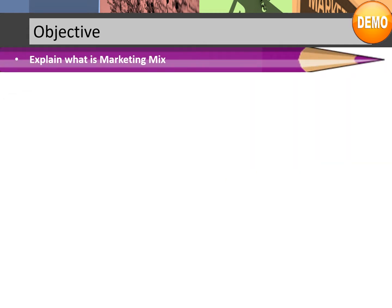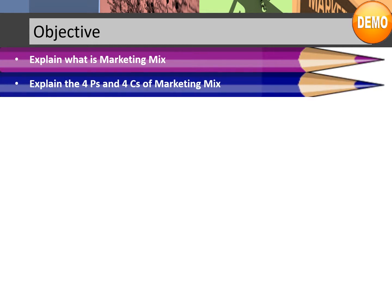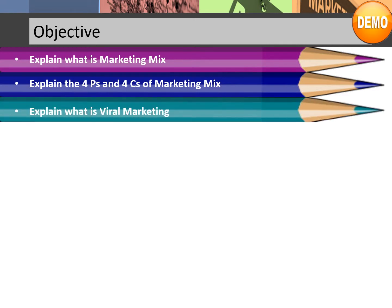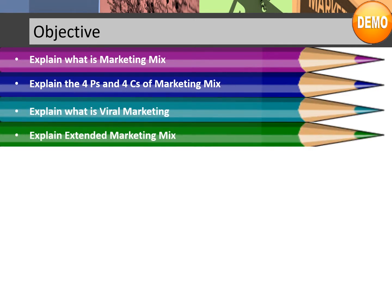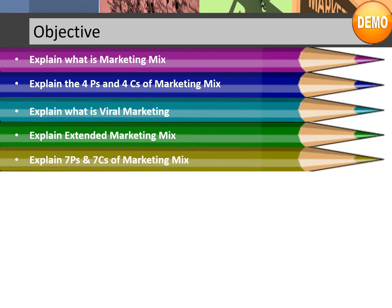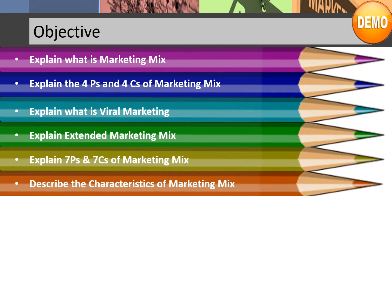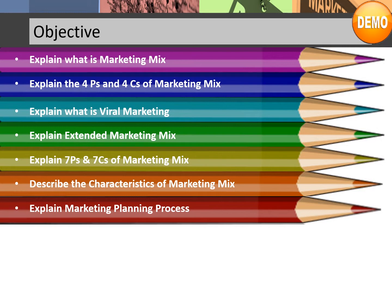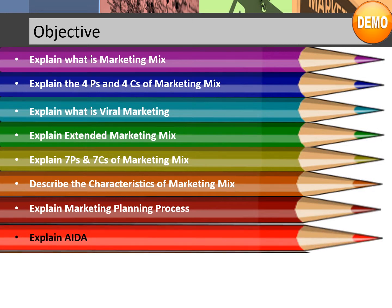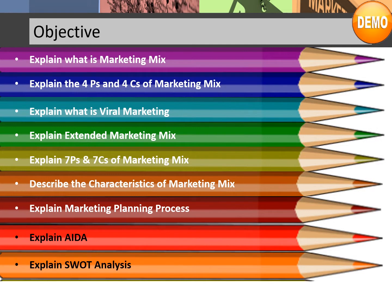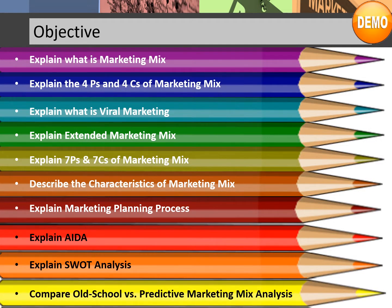Let us review the course objectives: explain what is marketing mix; explain the 4 P's and C's of marketing mix; explain what is viral marketing; explain extended marketing mix; explain 7 P's and 7 C's of marketing mix; describe the characteristics of marketing mix; explain marketing planning process; explain IDA; explain SWOT analysis; compare old school versus predictive marketing mix analysis.